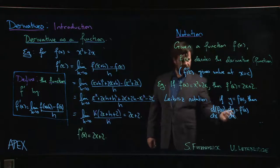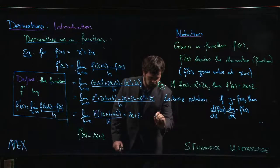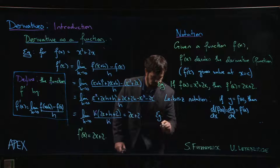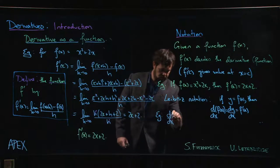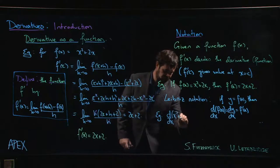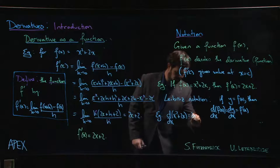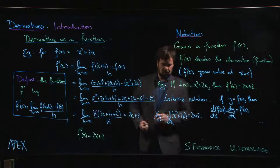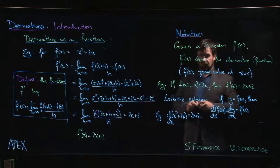The nice thing about this is that rather than having to write out the sentence, you can just say - and you can almost read this d/dx as 'the derivative of' - so the derivative of x squared plus 2x is 2x plus 2.